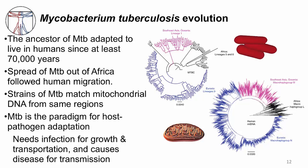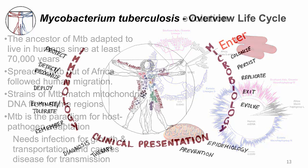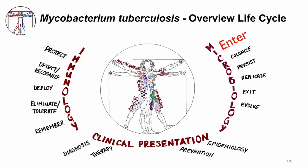For the next several slides, I want to show you an overview of the life cycle for MTB in humans using our framework. In another video, we will be discussing more details of each of these steps. As you will see, MTB uses its host for growth, for transportation, and even causes disease for transmission.